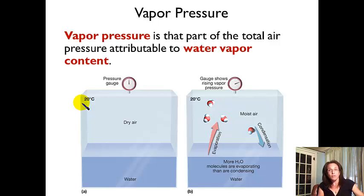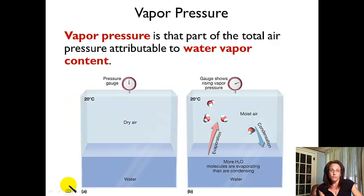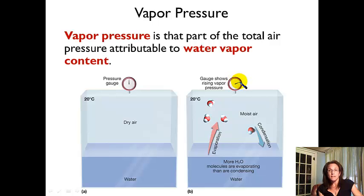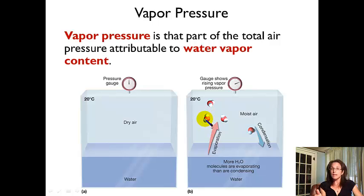Vapor pressure is actually a measure of pressure — what amount of the total air pressure is coming from the water vapor content in the air. With dry air (no water vapor), vapor pressure is zero. As evaporation occurs and water molecules enter the gaseous form, vapor pressure increases. So if water content goes up, vapor pressure goes up; if absolute humidity or mixing ratio goes up, vapor pressure goes up.